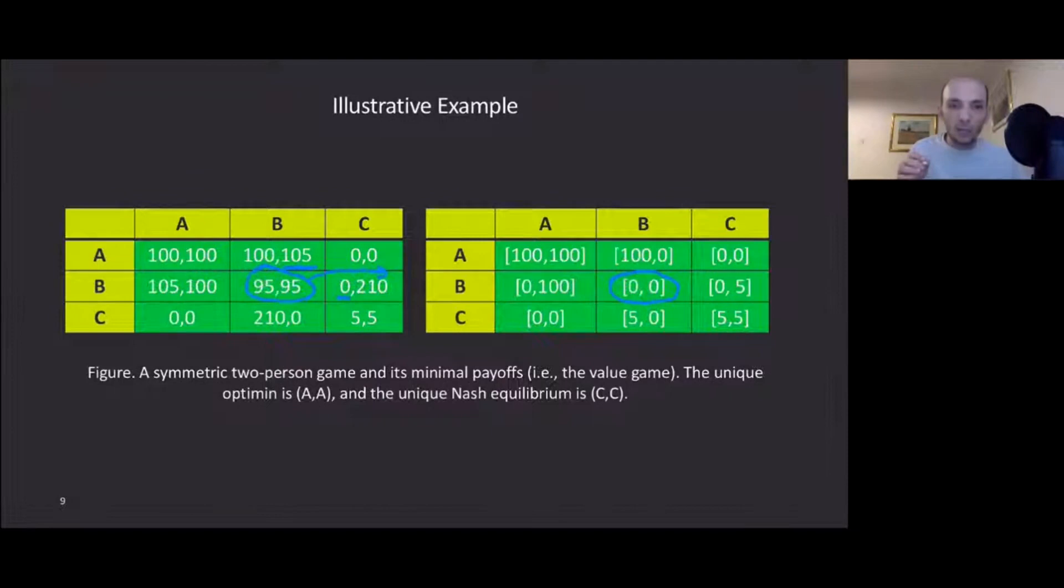However, the opponent in this case might deviate to C, which is a profitable deviation, in which case my payoff as a row player would decrease to zero. That's why the worst case payoffs or the minimum payoffs when the agreement BB is considered is 00 for both players. CC is a Nash equilibrium, is a self-enforcing agreement. Therefore, its minimal payoffs is equivalent to its payoff vector. And then optimum point definition says consider the Pareto optimal boundary of these minimal payoffs games, which is, there's a unique Pareto dominant strategy profile, which is AA. So AA is the unique optimum point in the original game.